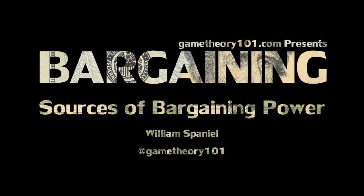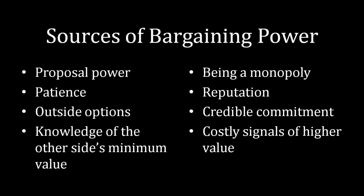The sources of bargaining power that we'll be learning about in this course are as follows: proposal power, patience, outside options, knowledge of the other side's minimum value, having monopoly power, having a reputation for toughness, having the ability to issue credible commitments, and also having the ability to issue costly signals of higher value.